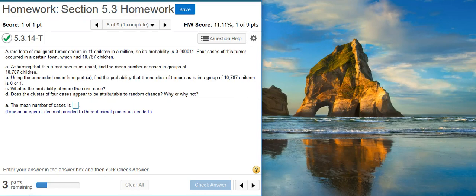Hi, I'm Professor Curtis of Aspire Mountain Academy, here with more statistics homework help. Today we're going to learn how to use the Poisson distribution to evaluate malignant tumor data. Here's our problem statement: A rare form of malignant tumor occurs in 11 children in a million, so its probability is 0.000011. Four cases of this tumor occurred in a certain town which had 10,787 children.